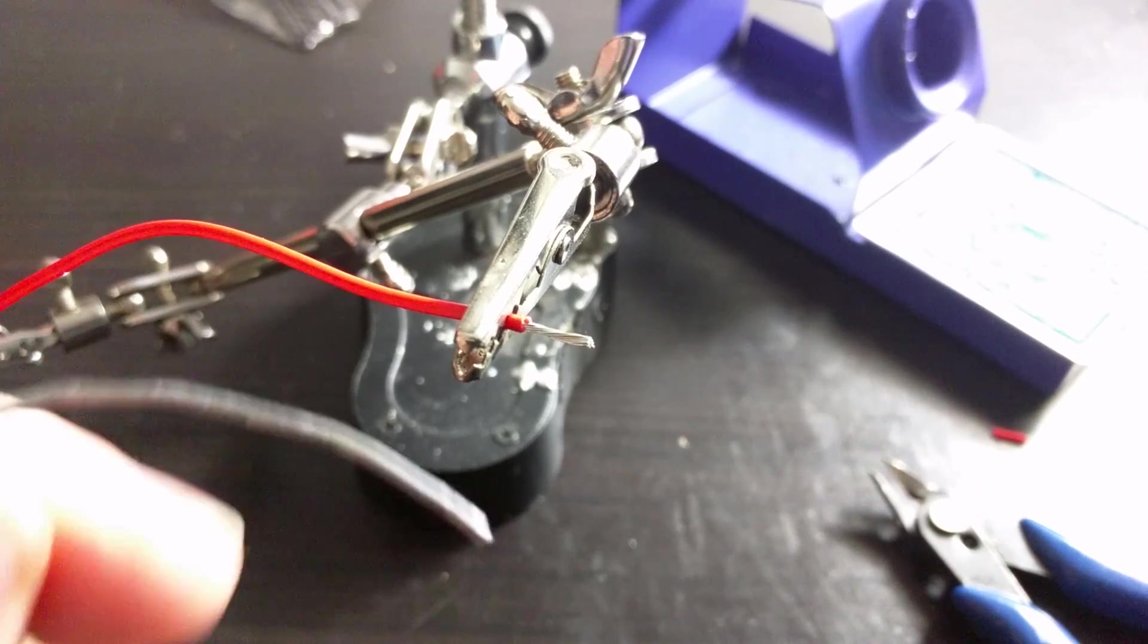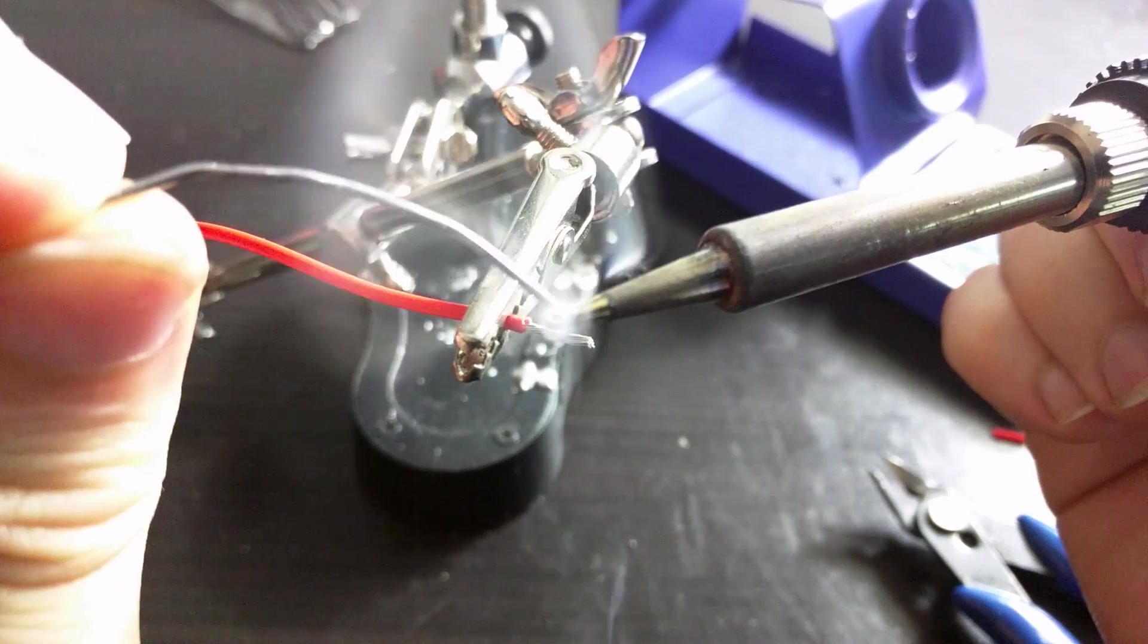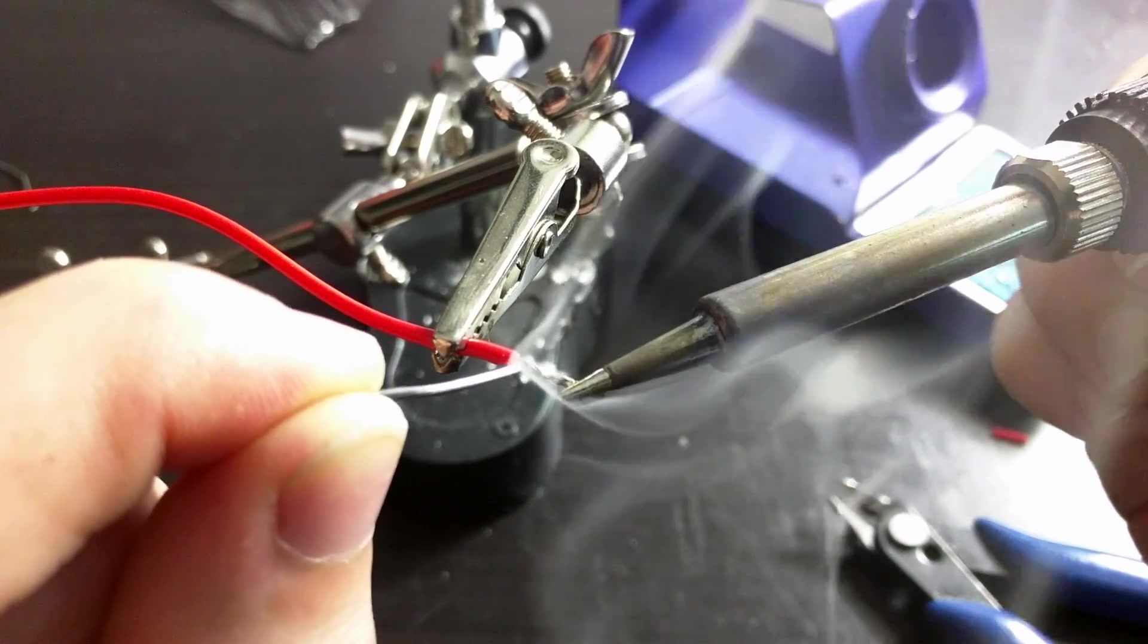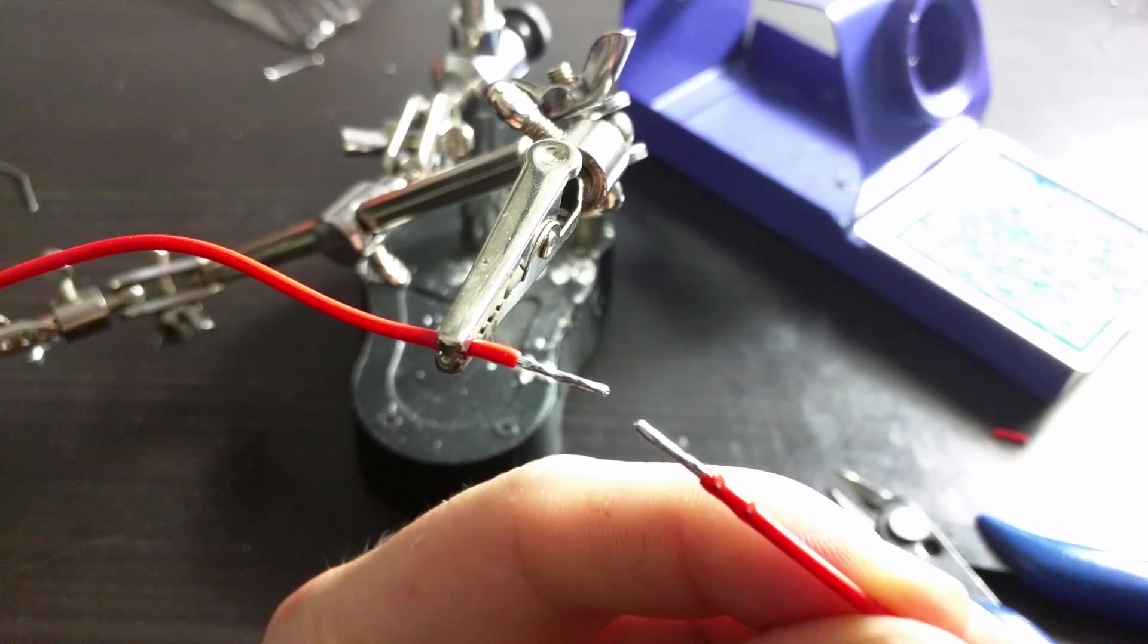Now, what I need to do is tin the end of this wire to ensure that I can get a good and quick connection. So, I'll tin the iron, apply the iron to the connection and then apply the solder directly to the wire, not the iron. So, I now have two tinned ends of wire. The only thing left to do now is join them.